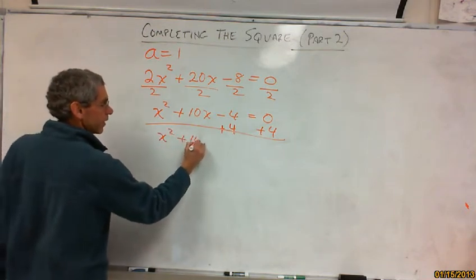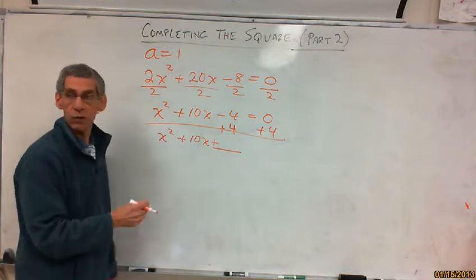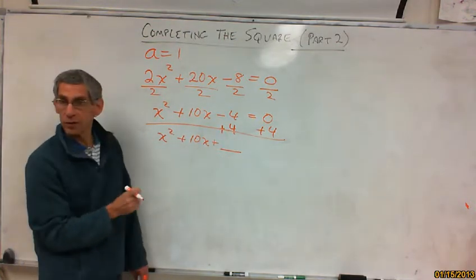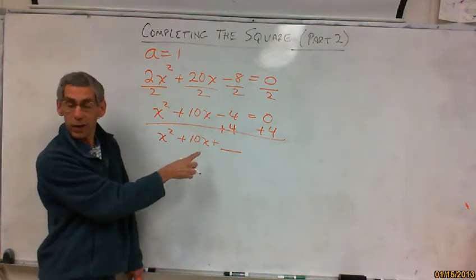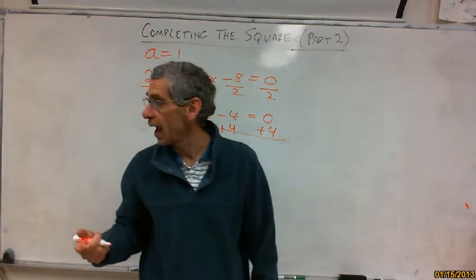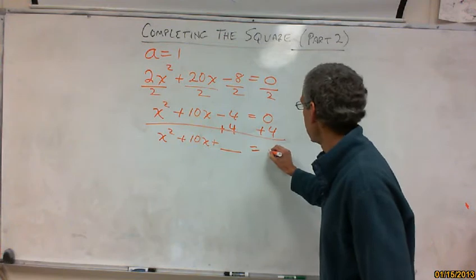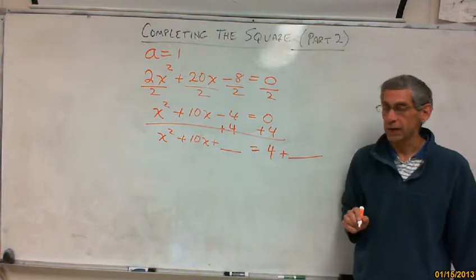X squared plus 10x plus space. Have you noticed that this is always going to be a plus? Have you noticed? Yeah. Because even if this were negative here, negative squared becomes a plus. So you're always adding when you do the complete whole square. Equals 4 plus the other line, the other space.